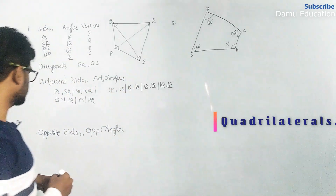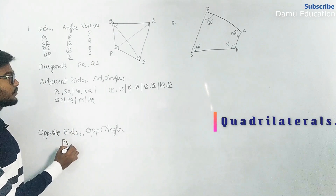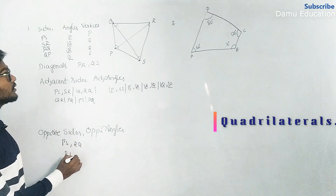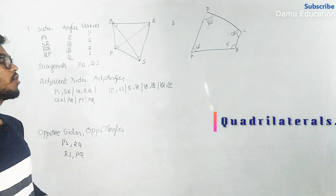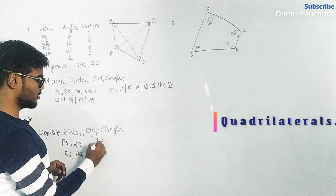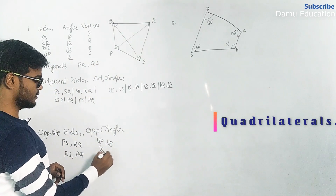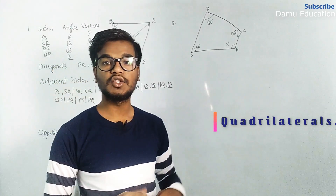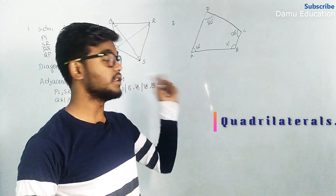The opposite sides are: PS and RQ are opposite sides, and SR and PQ are opposite sides. The opposite angles are: angle P and angle R are opposite angles, and angle S and angle Q are opposite angles.